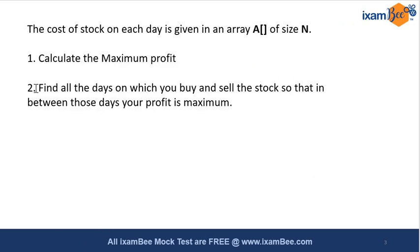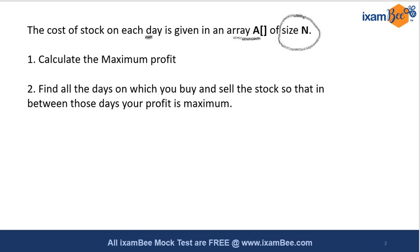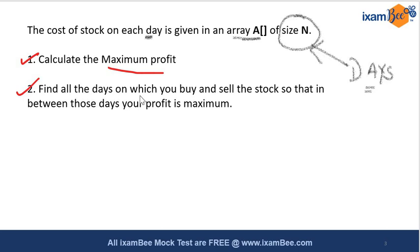The question states you are given the cost on each day in an array of size n, where n is the number of days for which we know the stock prices. We have two questions: first, calculate the maximum profit; second, find all the days on which you are buying and selling the stock so that your profit is maximum. In this video we take question one and in the next video we take question two.